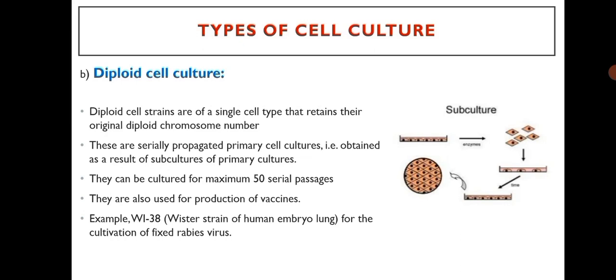Diploid cell culture: diploid cell strains are of a single cell type that retains their original diploid chromosomal number. These are serially propagated primary cell cultures obtained as a result of subcultures of primary cultures. They can be cultured for a maximum of 50 serial passages and are also used for production of vaccines. For example, WI-38 strain of human embryo lung cells for the cultivation of fixed rabies virus.